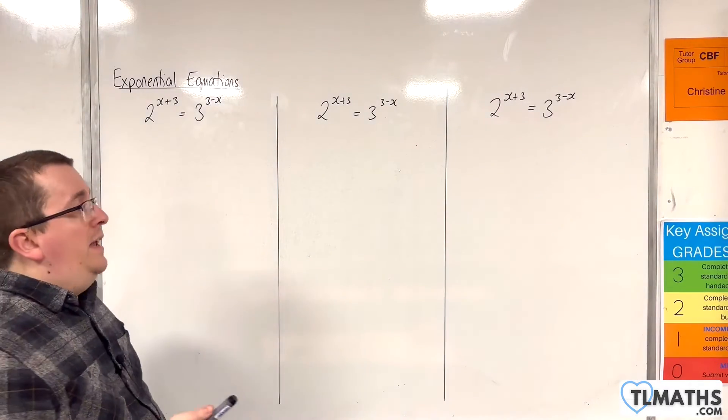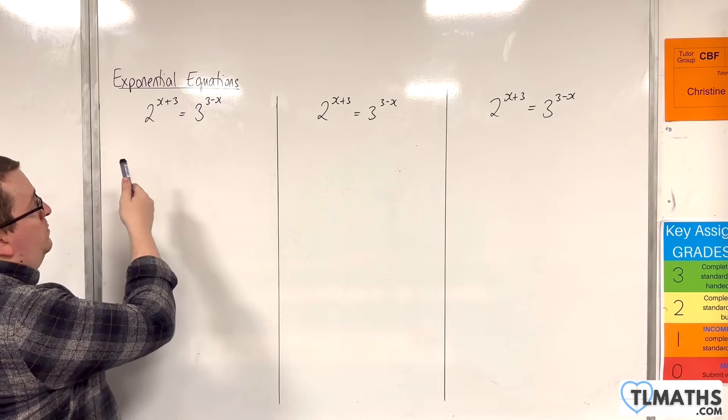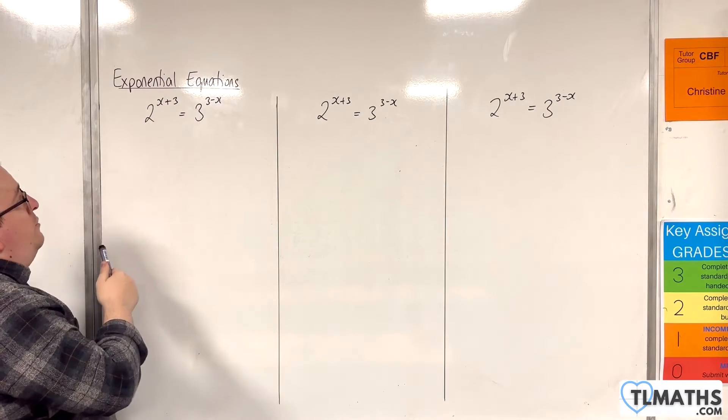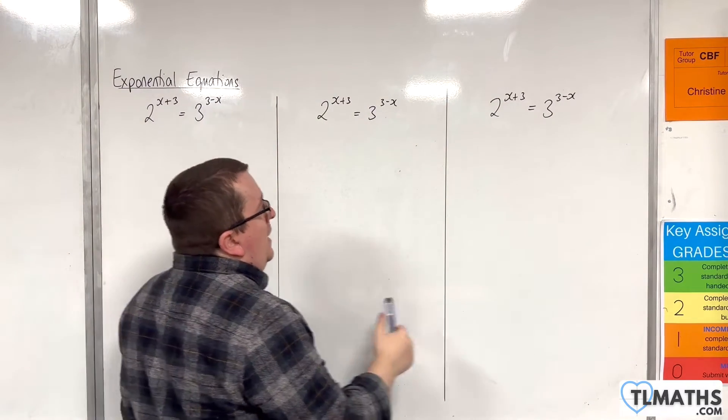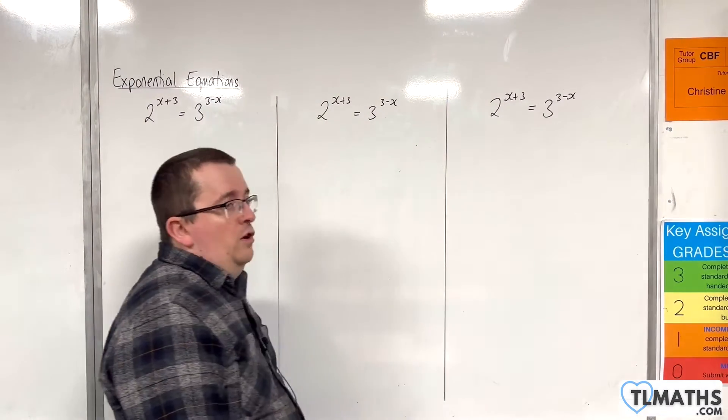So, the bases I'm going to use here: first of all, I'm going to use base 2, because we've got 2 to the power of. Then, I'm going to try it with base 3, because we've got 3 to the power of. And then, finally, natural logarithm.